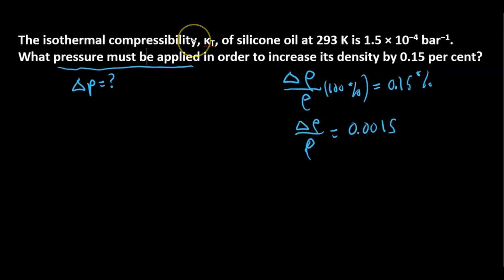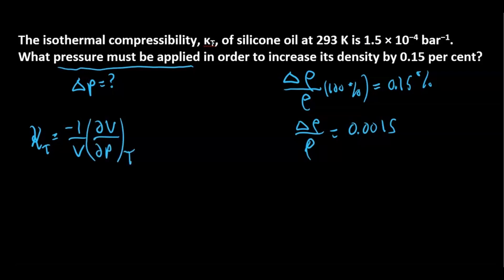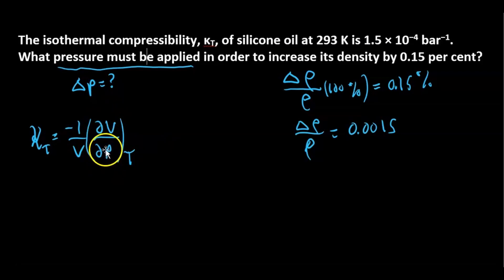What is the isothermal compressibility? kappa_T — T means constant temperature — is defined as negative 1 over V times the partial derivative of V with respect to pressure holding temperature constant. I always think of this as squishing a balloon. Whenever you see these partial derivatives, it's nice to know the physical process: you're applying pressure to this oil at constant temperature.